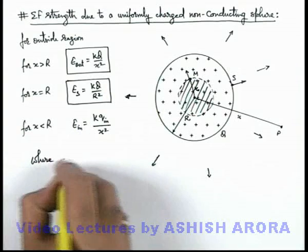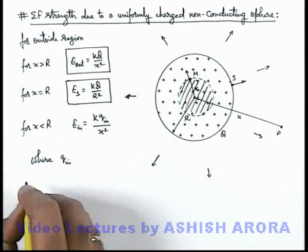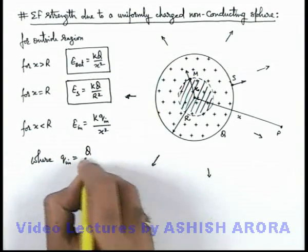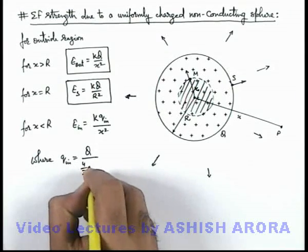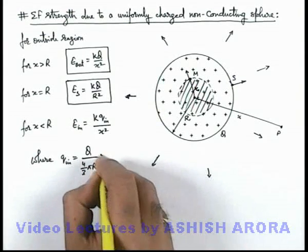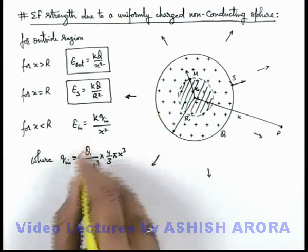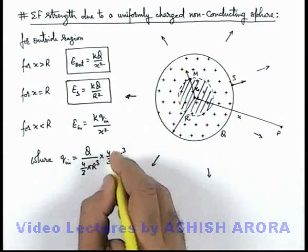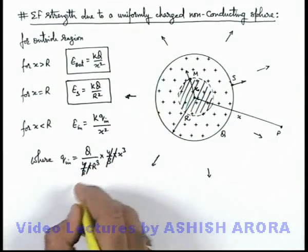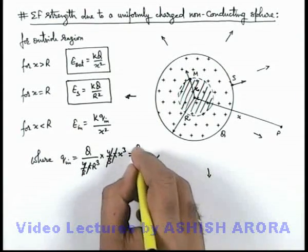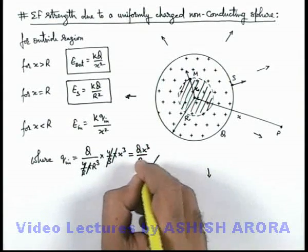We can easily calculate the value of q_inside, which is given by Q/(4/3πR³), which is the density of charge, multiplied by 4/3πx³. This gives the charge enclosed within this region. Here 4/3π gets cancelled out, so it will be Q·x³/R³.